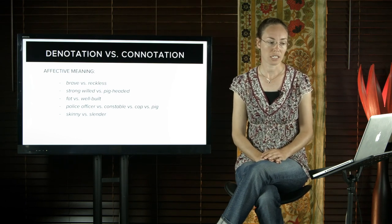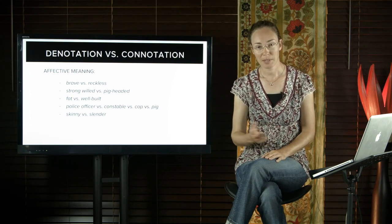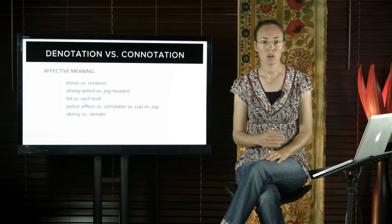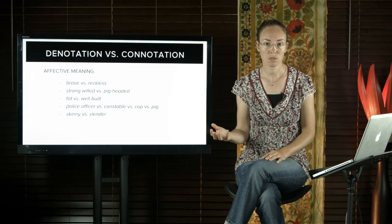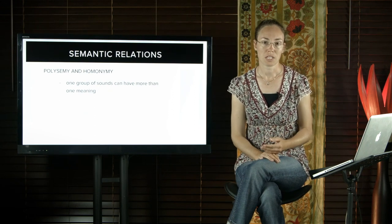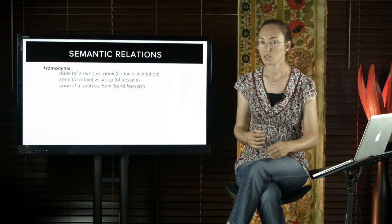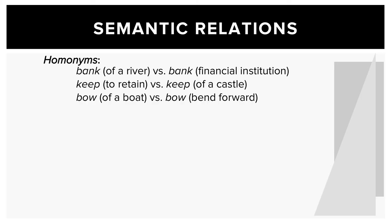Let's have a look at semantic relations and we'll start with polysemy and homonymy. Now this sounds complicated, but it actually isn't. Homonymy or polysemy just refer to the fact that one group of sounds can have more than one meaning. Homonyms are unrelated lexemes that just happen to have the same form. So we have bank of a river versus a bank as in a financial institution, keep meaning to retain plus keep meaning the keep of a castle, you can have the bow of a boat or to bow meaning to bend forward.